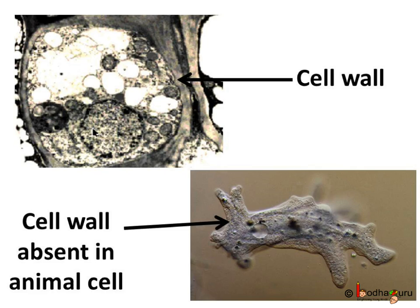If we observe the plant cell under a microscope, there is a thick outer membrane additional to the cell membrane. This is called the cell wall. This additional layer surrounding the cell membrane is required by plants for their protection — protection against variation in climate such as variation in temperature, high wind speed, moisture, etc. They are exposed to this variation because they cannot move unlike us.